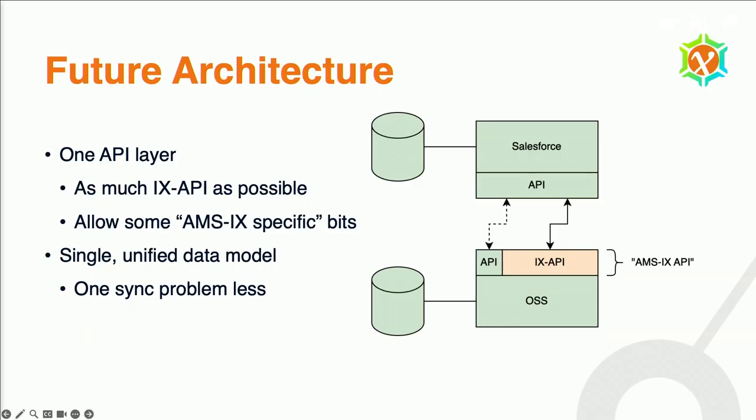You have to compromise somewhere, but the idea is that if we integrate IX API more tightly with our OSS system, then part of the API we currently have on the OSS we can replace with IX API. That means we would be eating our own dog food, which also helps us make sure that what we build is actually useful and valuable. So that's the future architecture — one API layer that we maintain, as much of it pushed into IX API. There might still be some M6-specific bits that will always remain, but we'll try to see how generic those are and maybe make them part of the standard spec as well. Hopefully we end up with a single unified data model, and that would take care of one less sync problem.